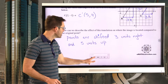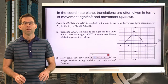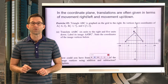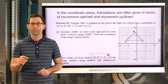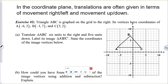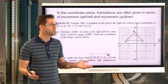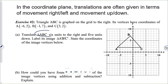In the coordinate plane, translations are often given in terms of movements right-left and up-down. Exercise number two: Triangle ABC is graphed on the grid. Its vertices have coordinates at A, B, and C. Letter A asks us to translate ABC six units to the right and five units down, label its image A prime, B prime, C prime, and state the coordinates of the image vertices.